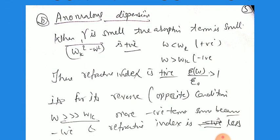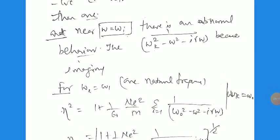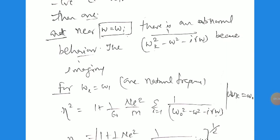Now we switch to Anomalous Dispersion. When γ is small, the term 1/(ωₖ² − ω²) is positive when ω < ωₖ, and negative when ω > ωₖ. The refractive index is greater than 1 when ω/ω₀ < 1. For the opposite condition, where ω > ωₖ, more negative terms appear, so the refractive index becomes less than 1 or imaginary — this is the anomalous dispersion region.